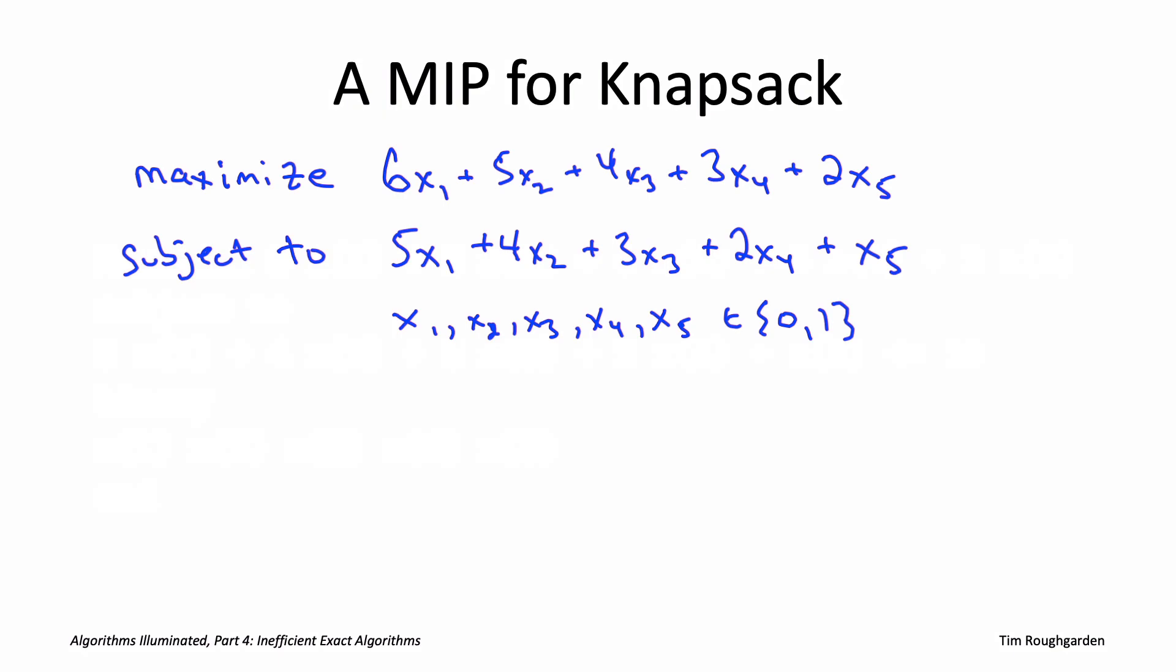To elaborate on the point, imagine we had a harder knapsack problem called the two-dimensional knapsack problem, where now every item j has as usual its value vj, it has its size sj. Suppose it also has a third parameter, a weight, wj.